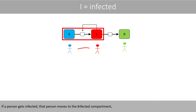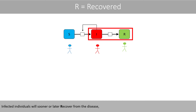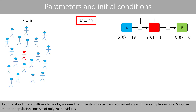If a person gets infected, that person moves to the infected compartment, where it can spread the disease to susceptible individuals. Infected individuals will sooner or later recover from the disease, which means that they can no longer spread the disease. Recovered people are assumed to have acquired immunity, which means that they can no longer be infected. To understand how an SIR model works, we need to understand some basic epidemiology and use a simple example.